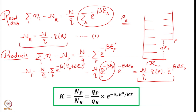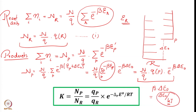We have the expression for N_P and the expression for N_R. Now we can take the ratio: K is equal to N_P over N_R. The N over Q terms cancel out, giving us Q_P over Q_R into exponential minus beta delta E₀. To elaborate: beta delta E₀ equals delta E₀ over kT, and if I want to express per mole, I multiply by N_A, so k times N_A becomes R. If expressing per molecule, delta E₀ over kT is sufficient; per mole, it becomes delta E₀ over RT.